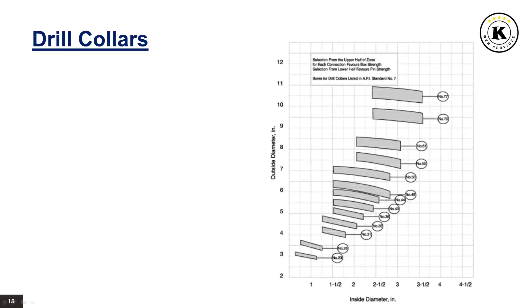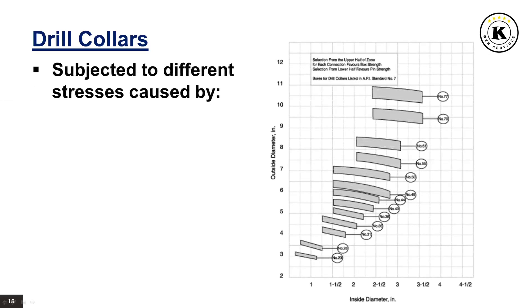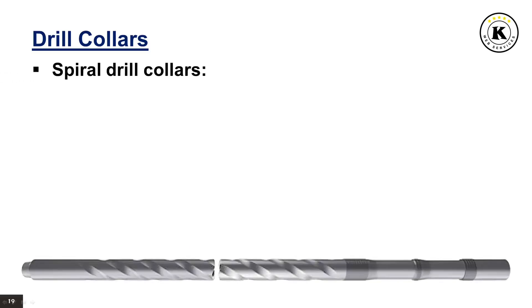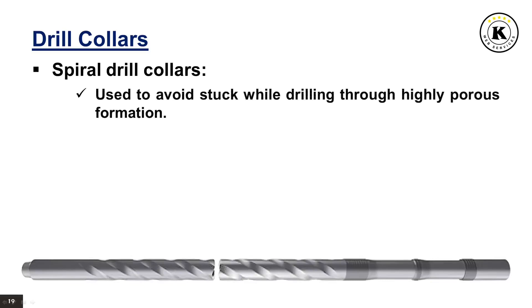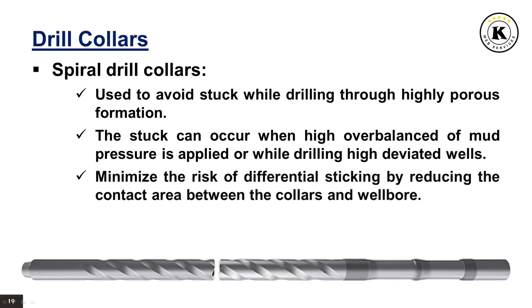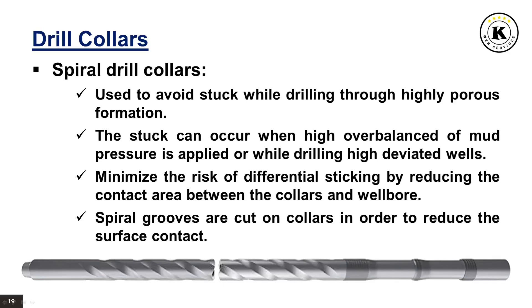Similarly to drill pipe, drill collars are subjected to different stresses caused by tension, vibration, bending and buckling forces, and alternate tension and compression. Spiral drill collars are used to avoid stuck pipe while drilling through highly porous formations. Stuck pipe can occur when high overbalanced mud pressure is applied or while drilling highly deviated wells. Spiral grooves are cut on collars in order to reduce surface contact between the collars and the wellbore, minimizing the risk of differential sticking.